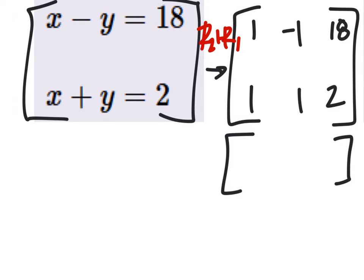I didn't do anything. Actually, I did do something to those. Row 2 plus row 1, so 1 plus 1 would give me 2. 1 plus negative 1 is 0. And 2 plus 18 is 20. Now I didn't do anything to that second row yet, though.